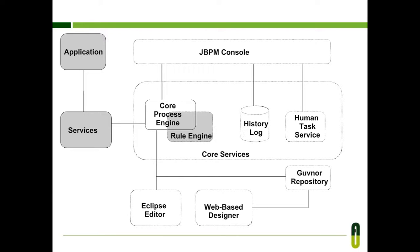Two types of graphical editors are supported for defining your business processes. The Eclipse plugin is an extension to the Eclipse IDE, targeted towards developers, and allows you to create business processes using drag and drop, advanced debugging, etc. The web-based designer allows business users to manage business processes in a web-based environment. The governor repository is an optional component that can be used to store all your business processes. It supports collaboration, versioning, and there is integration with both the Eclipse plugin and web-based designer, supporting round-tripping between the different tools.